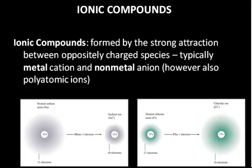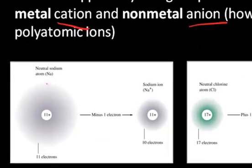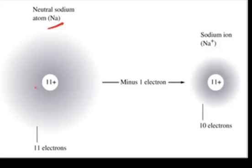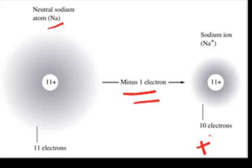You need to remember what the words cation and anion mean. Take sodium for example. The sodium atom has 11 protons and 11 electrons. The protons are compactly housed in the nucleus, whereas the electrons are outside the nucleus in some diffuse space. If the sodium atom loses one electron, you will form the sodium ion, or a cation of sodium. Because you've lost one electron, you still have 11 protons but only 10 electrons, so that ion is carrying a plus one charge.